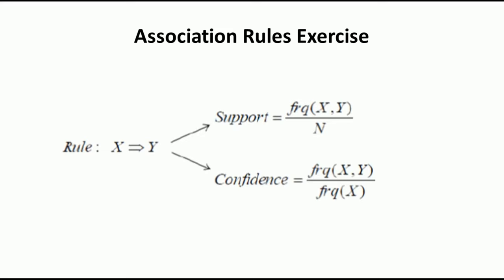How to calculate the support — that is the very first question. If you want to calculate the support, let us assume x → y is the rule. The support is equivalent to frequency of x and y divided by n, that is the number of times items x and y were bought together divided by the total number of transactions. Similarly, the confidence is equivalent to frequency of x and y divided by the total number of times item x was bought in all transactions.